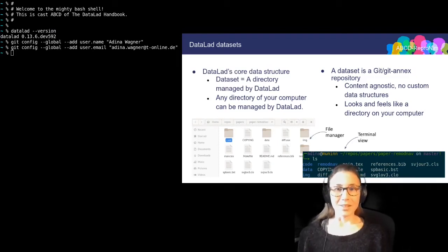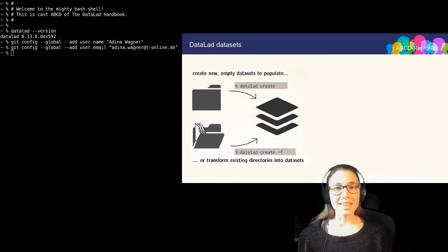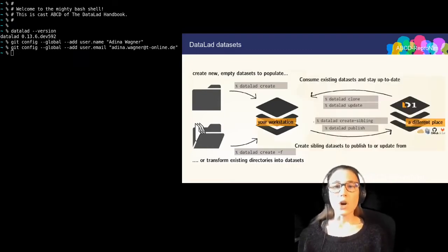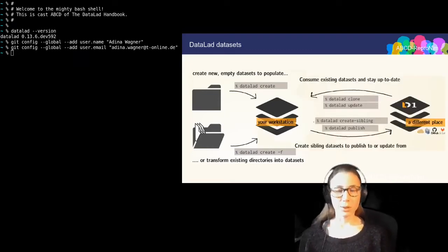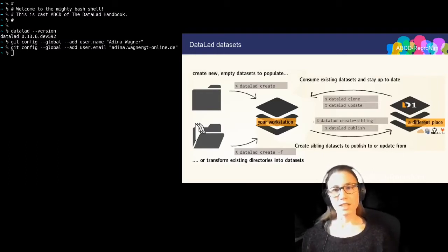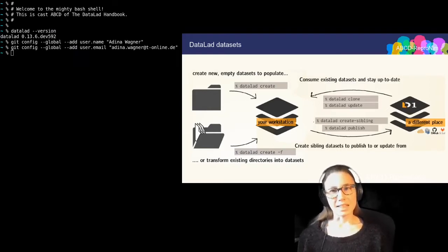In order to get a dataset, you can either create a new dataset from scratch or transform an existing directory or Git repository into a dataset, or you can install a dataset from somewhere else. You will see both options in this session, but in order to demonstrate the first set of features of datasets, I'm starting with creating a dataset from scratch.